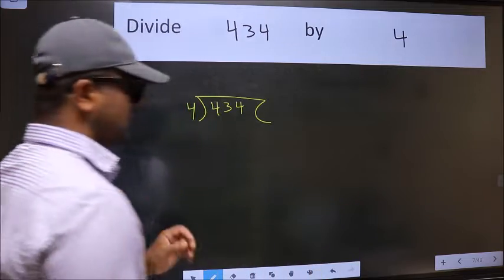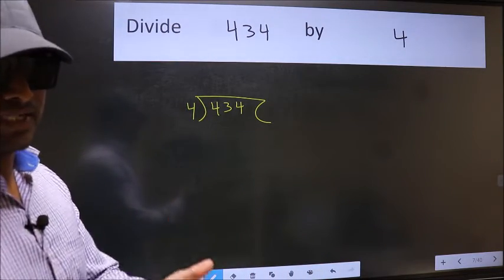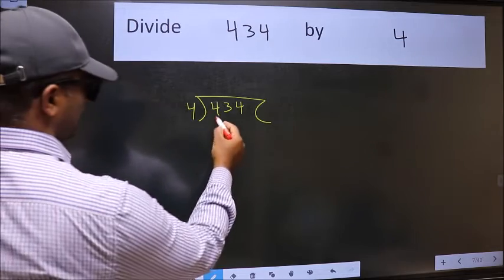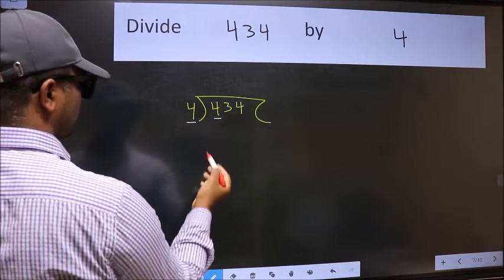434 and 4 here. This is your step 1. Next, here we have 4, here also 4.